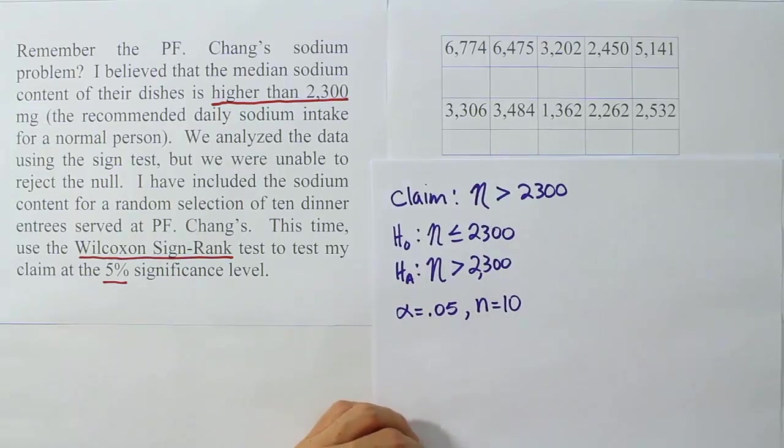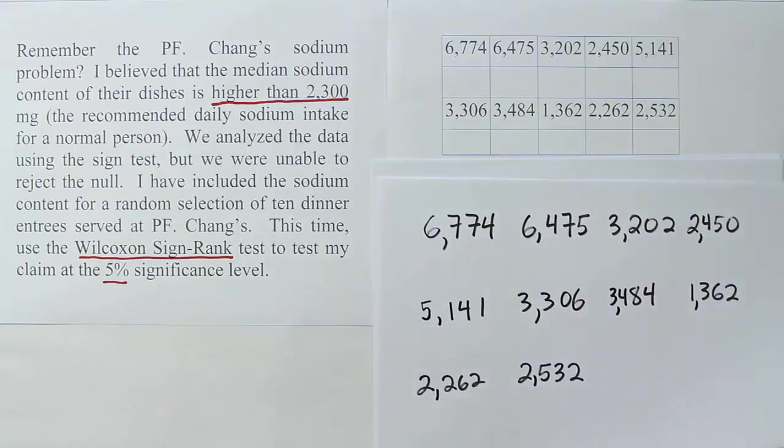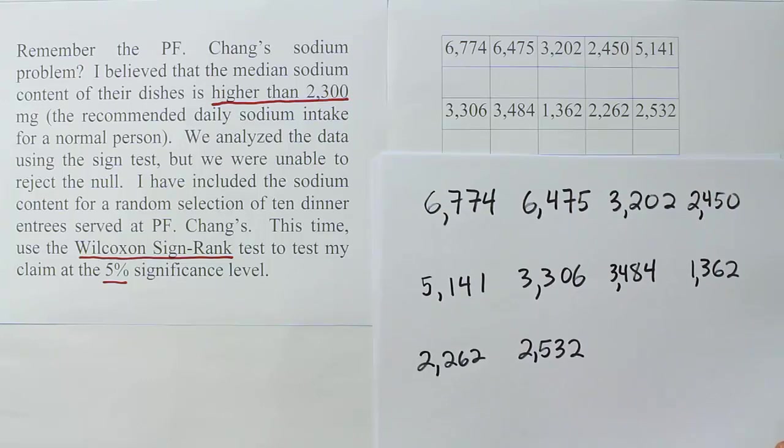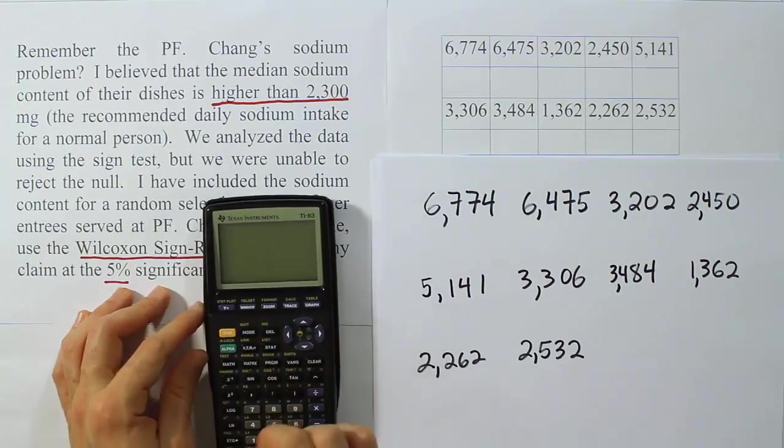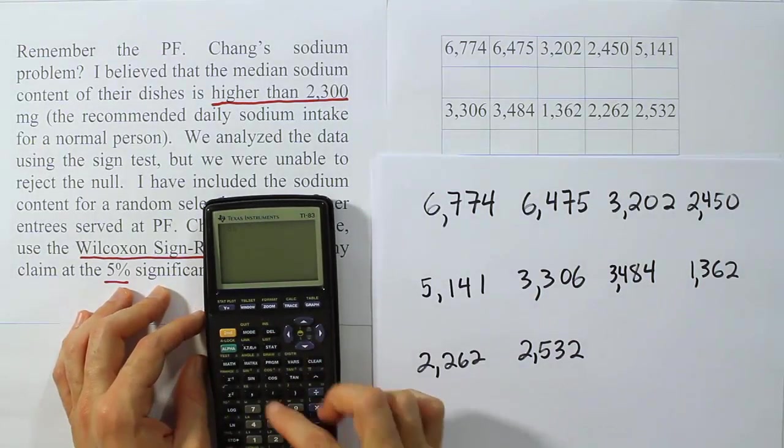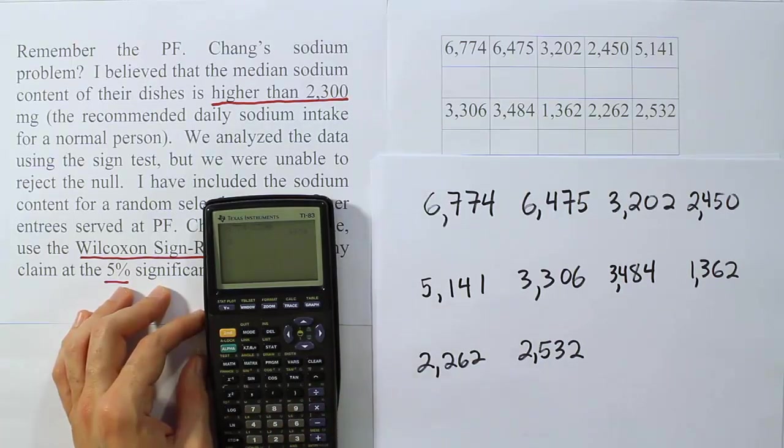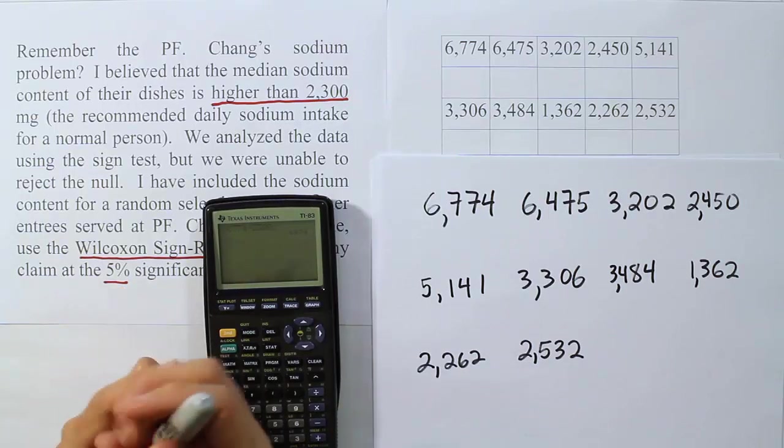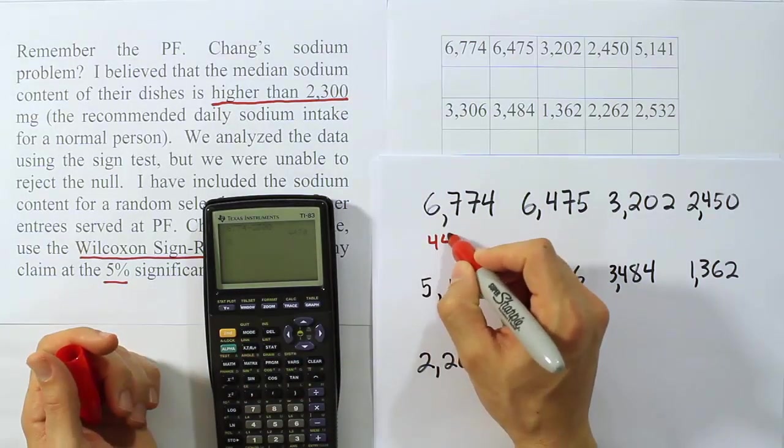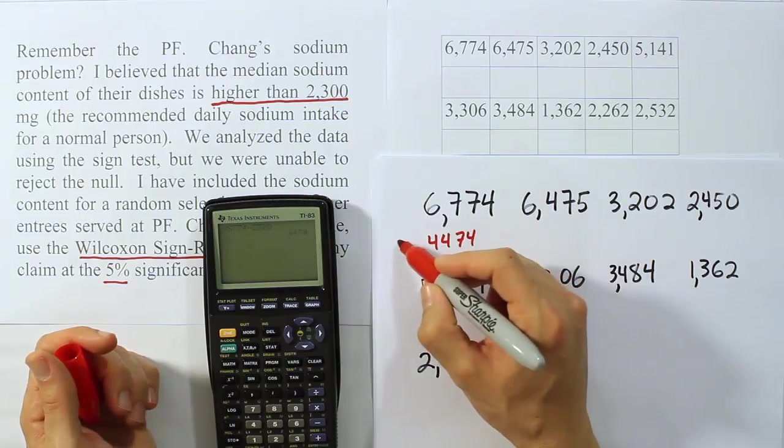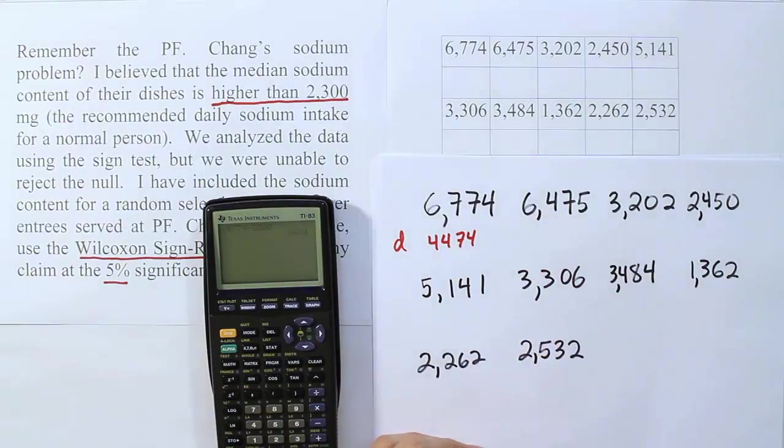Now let's manipulate the data. We want to do subtraction from every single one of those values. We're going to subtract 2300. So I've rewritten the data here on a sheet of paper. We're actually going to go through and do the subtraction for each one of these. So in each case, 6774 minus 2300, and when we do that, we end up with the answer 4474. So that's my first difference. I'm putting D here for differences.